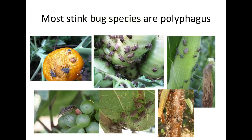Tomato leaves and stems aren't a particularly desired food for stink bugs — they actually can't complete their development just on tomatoes and will end up dying. But that fruit in late summer is a nice snack for them, and that's what you want to protect most. It doesn't matter that they can't develop on the plant — they will still come and feed on the fruit, likely coming from other crops.